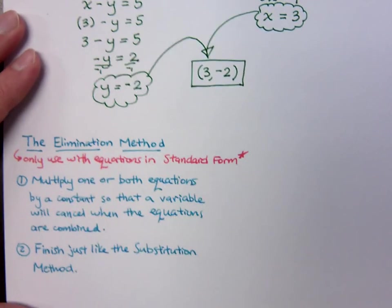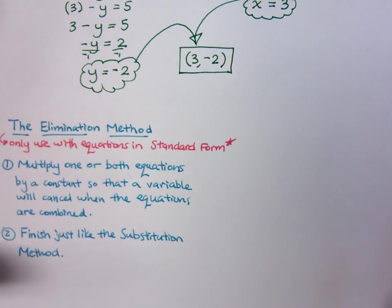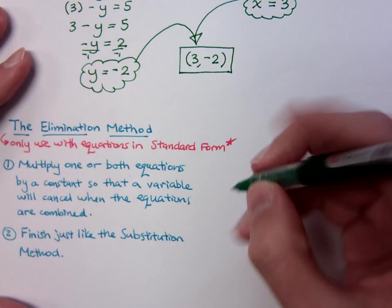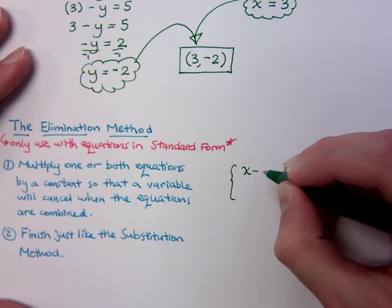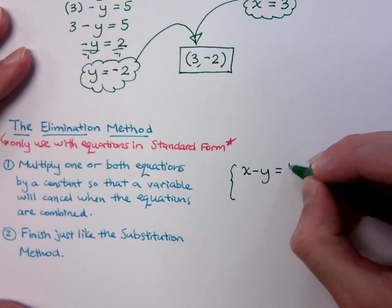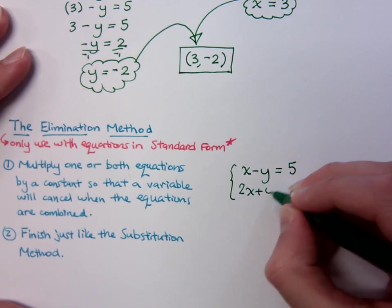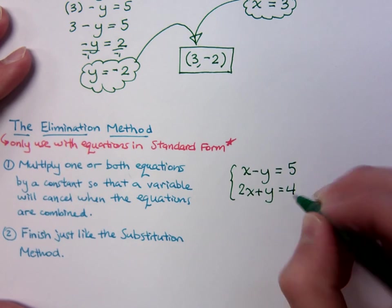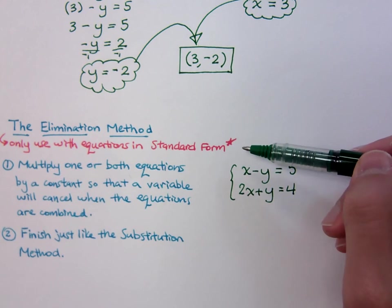Here are the steps for the elimination method. So you check out these steps, and let's write your problem again. x minus y equals 5. And the other equation, 2x plus y equals 4. Now the elimination method, I've got a little note here in red. You should only use this with equations that are in standard form.